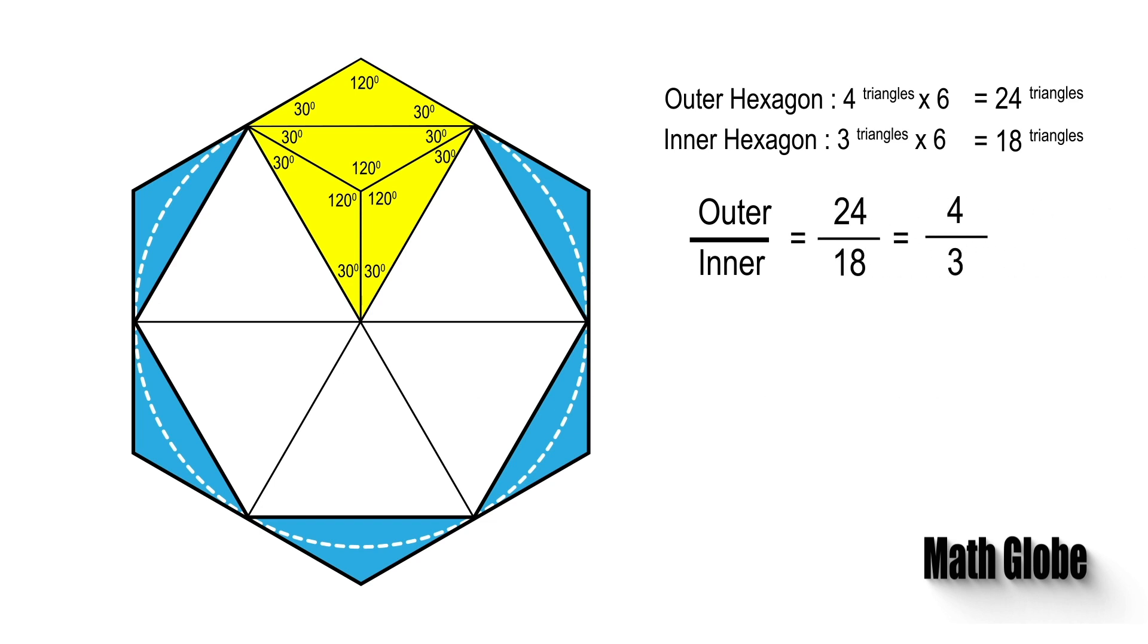Next, as the area of the outer hexagon is 4, area of the inner hexagon will be 3. So, blue painted area will be 1. And this is the solution.